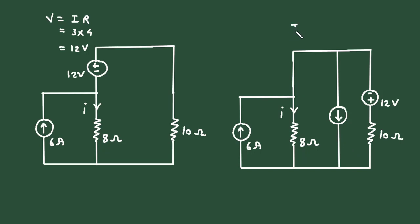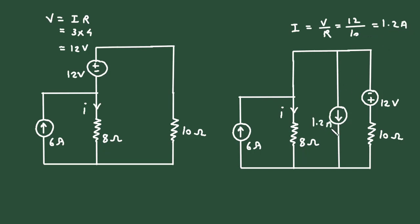Now current I is equal to V divided by R. The value of voltage is 12 volt and the value of resistance is 10 ohm, so it will be 1.2 ampere.